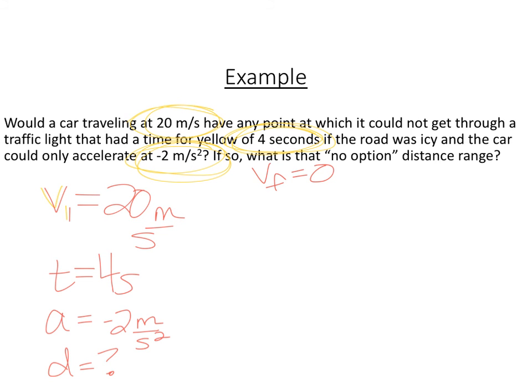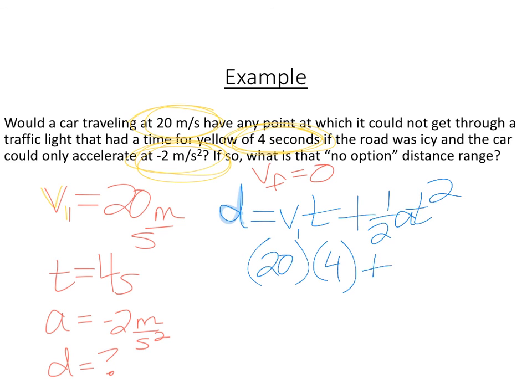We're pretty sure we're supposed to use the equation D equals VIT plus 1 half AT squared. Distance is what we're looking for. V initial is 20. T is 4. 1 half, and then our A was negative 2 meters per second. And our T again is 4, and this time it needs to be squared.